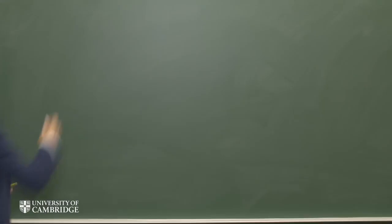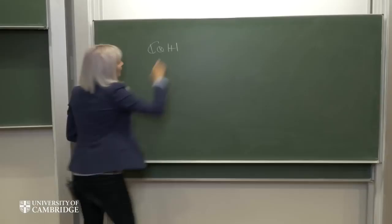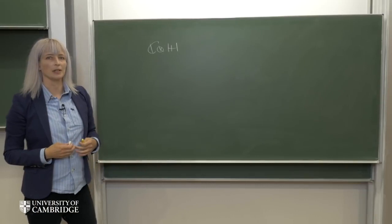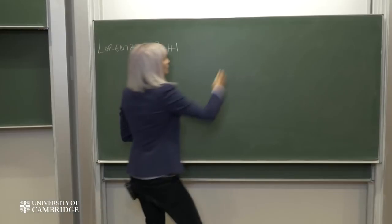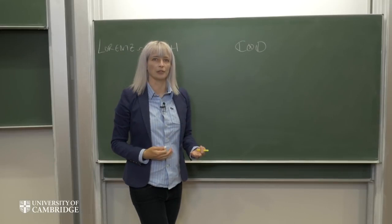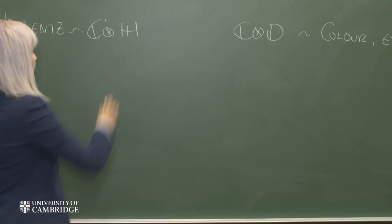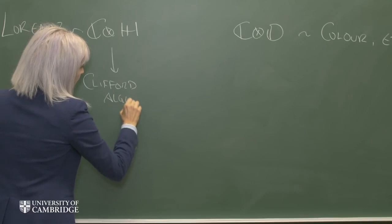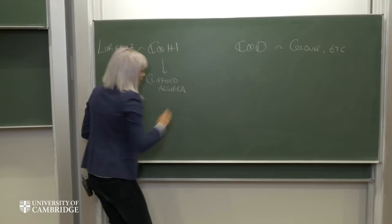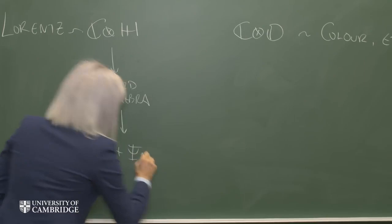The way this talk will run is as follows. We're going to start with the complex quaternions and see that they give Lorentzian degrees of freedom — things like spin and chirality. Then we're going to look at the complex octonions and find that these give other internal degrees of freedom, such as color and electric charge. We start with the complex quaternions and find that they give a faithful representation of a Clifford algebra. Once we have a Clifford algebra, we know how to build spinors, so we use a spinor construction and find left and right-handed Weyl spinors.